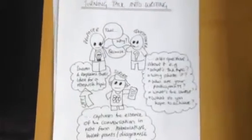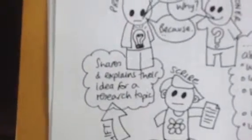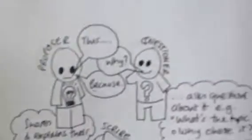So I've done a quick sketchy handout about it, about turning talk into writing. What you've got is people working in a team of three. So you have a proposer who's going to share and explain their idea for a research topic. You've got a questioner who's going to ask questions about it.